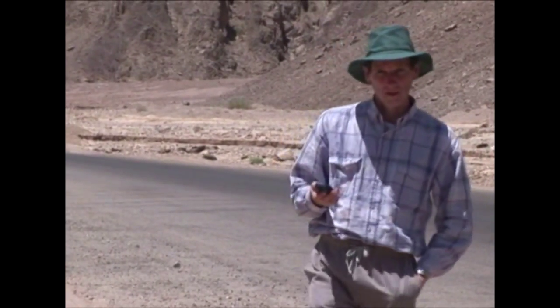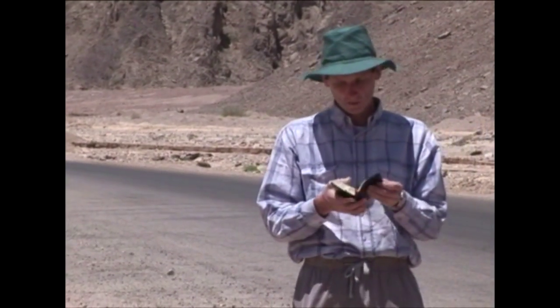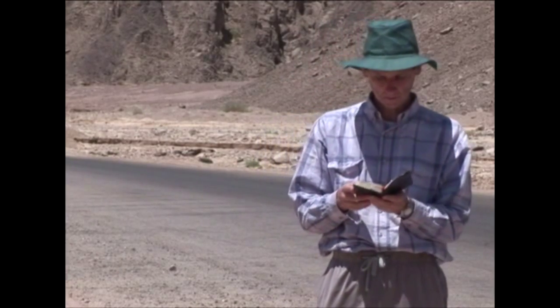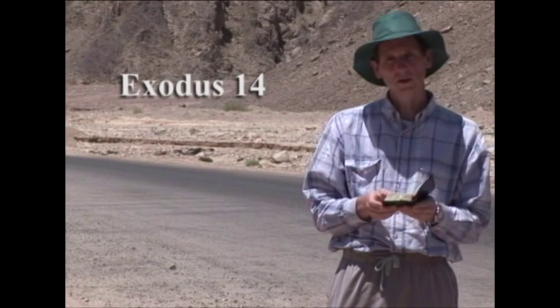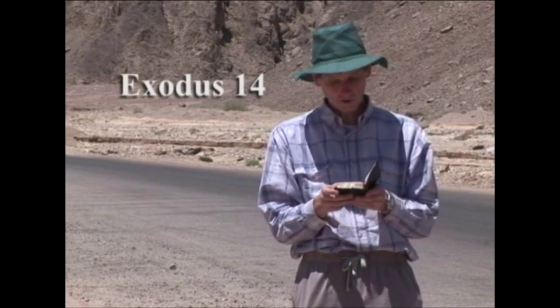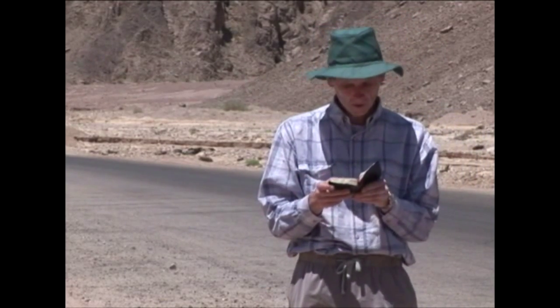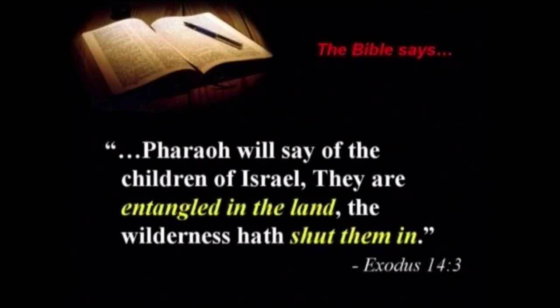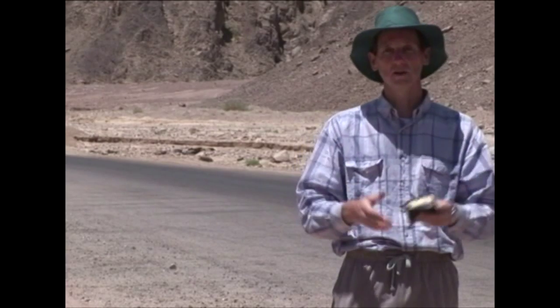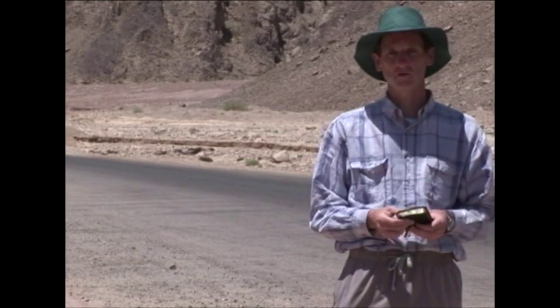We're now in the Wadi Watia, the canyon that leads from the Sinai Desert down to the Red Sea. This brings us to another very interesting Bible verse. In Exodus chapter 14, God tells Moses to turn and come down this way. Pharaoh was going to get news that the Hebrews were here. Exodus 14 verse 3: For Pharaoh will say of the children of Israel, They are entangled in the land, the wilderness hath shut them in. As they came down this canyon, they were effectively shut in, and to Pharaoh they looked entangled in the land. Wadi Watia leads right down to the Red Sea.